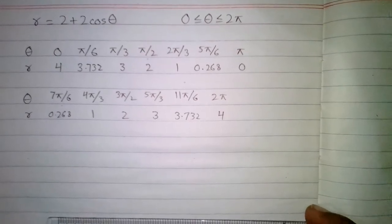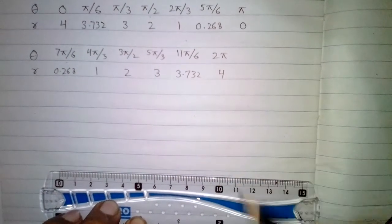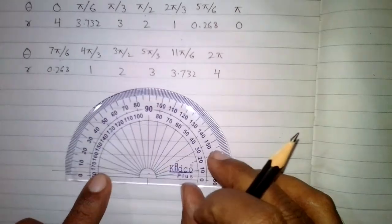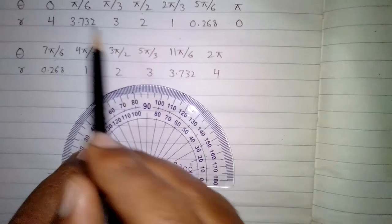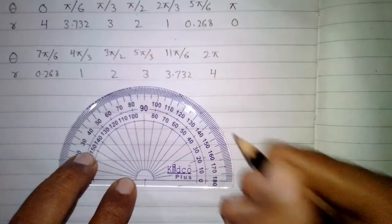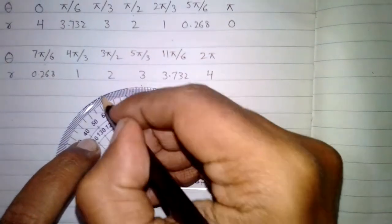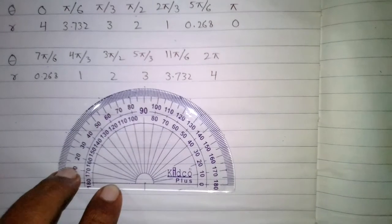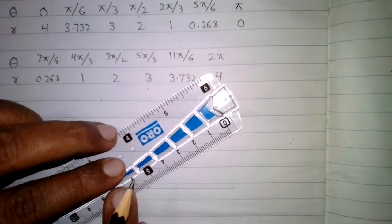First of all we will draw a line, and then with the help of a protractor we will make angles. All these angles are multiples of 30 degrees, so we will put points at 30, 60, 90, 120 degrees. We can then draw a line making an angle of 30 degrees or pi by 6.